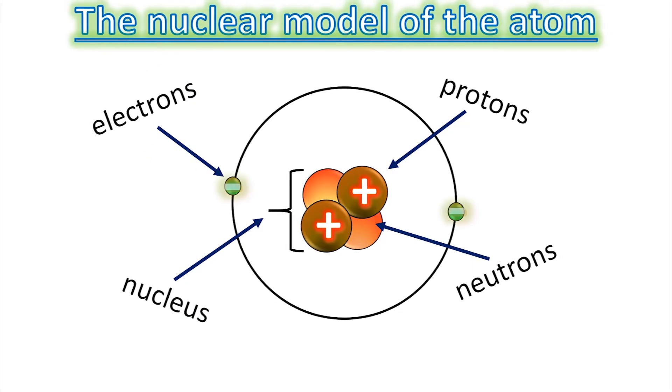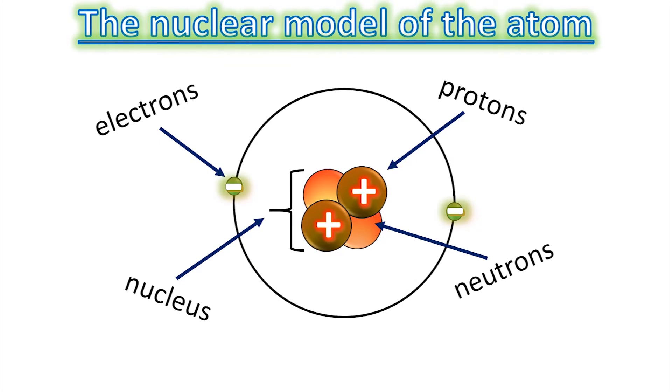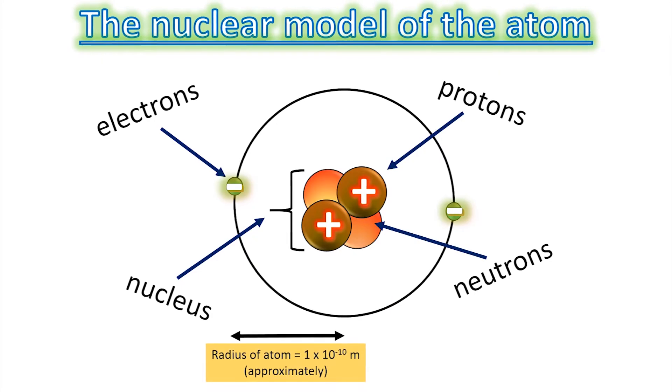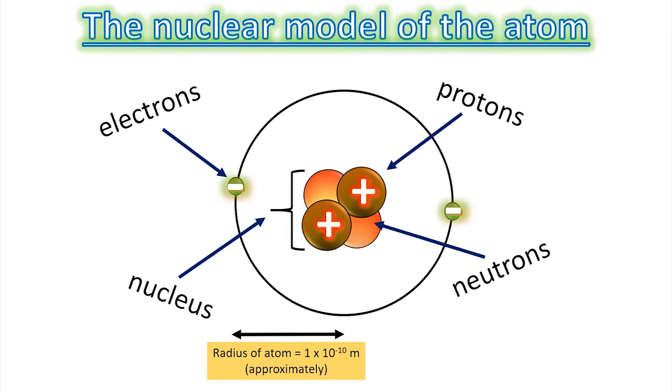Electrons are tiny and they have a negative charge. Okay, so that's how we understand the atom to look like. Of course, this is a rubbish drawing. The radius of the atom is about 1 times 10 to the minus 10 meters, which is incredibly tiny.